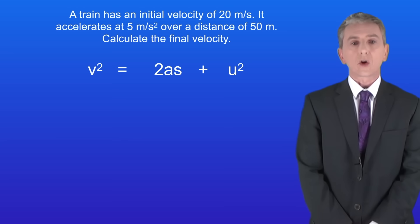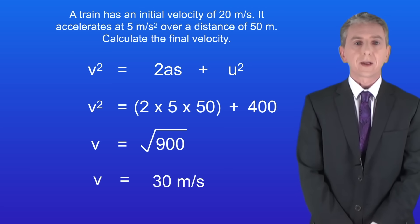Ok so here's the rearranged equation to calculate the final velocity. I'd like you to pause the video now and carry out this calculation. Ok the initial velocity is 20 metres per second and the acceleration is 5 metres per second squared. The distance is 50 metres. Putting the numbers into the equation gives us a final velocity of 30 metres per second.